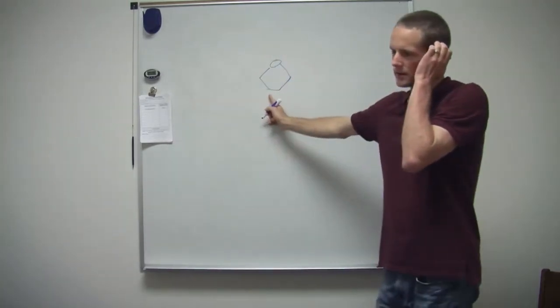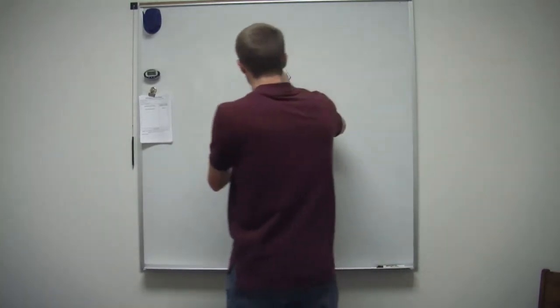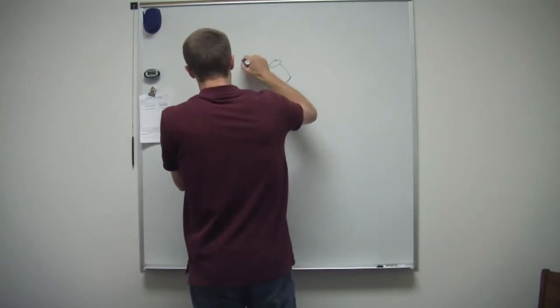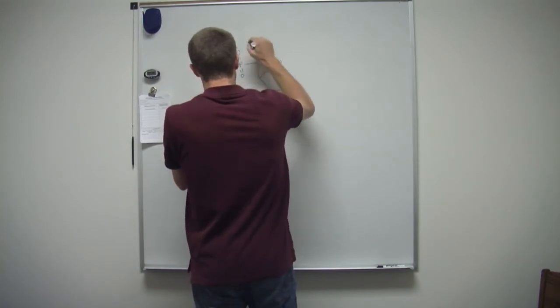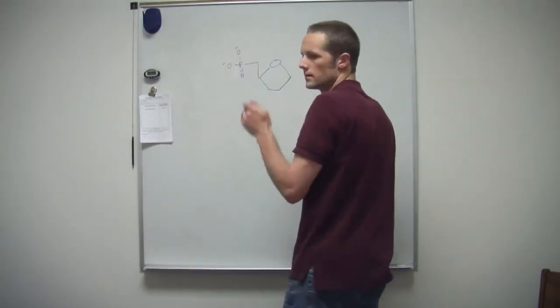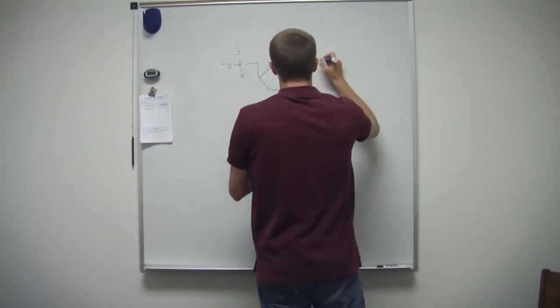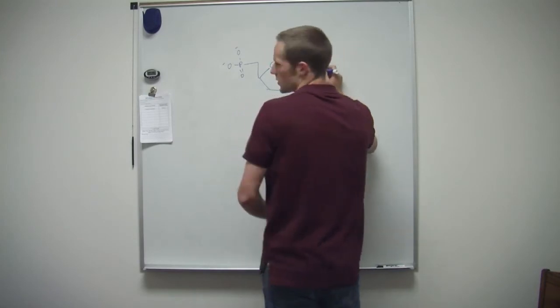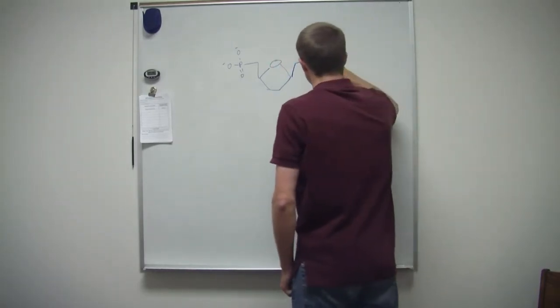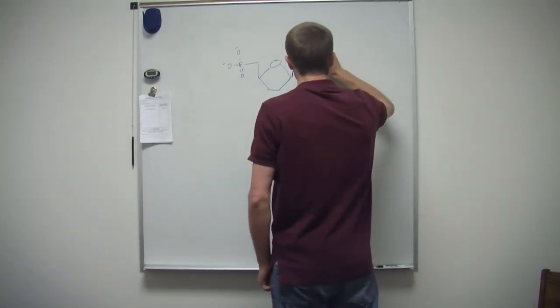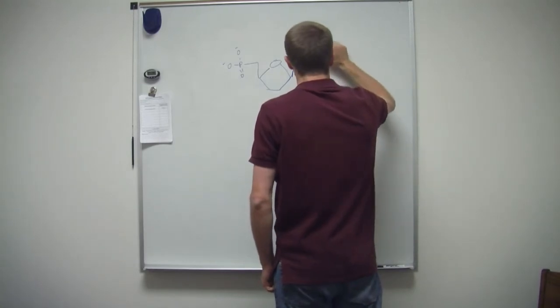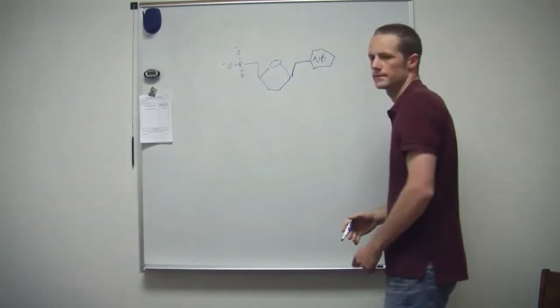So this is the sugar, right? Yeah. Yeah. Then from here we have a phosphate. Okay. So that's the phosphate group coming off of the sugar. Okay. And then over here we have some kind of nitrogenous base. Okay. This is a nucleic acid, right? Yeah. Yeah.